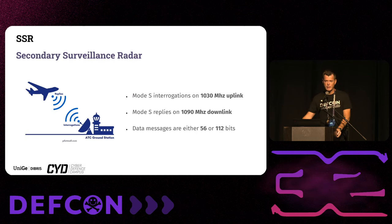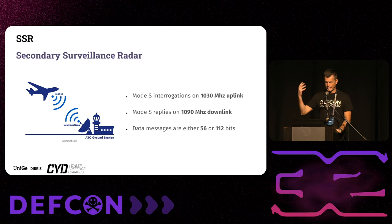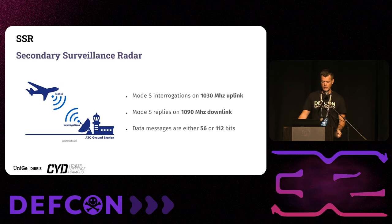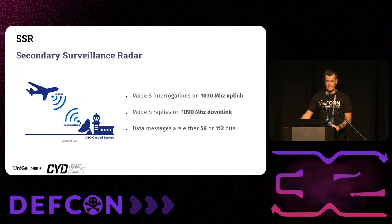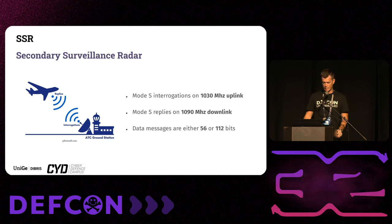Secondary Surveillance Radar is the oldest technology, based on ground radar stations. The radars interrogate aircraft using the Mode-S format on a 1030 MHz uplink, and the aircraft respond on a 1090 MHz downlink. These messages are very small — 56 or 112 bits — compared to IP packets which can be 1500 bytes, but they can contain a lot of information such as velocity, altitude, and heading. This technology is mandatory and used in all airspaces around the world.